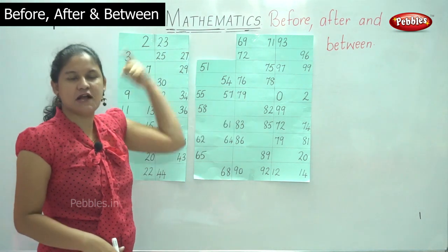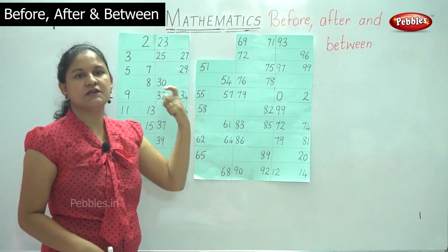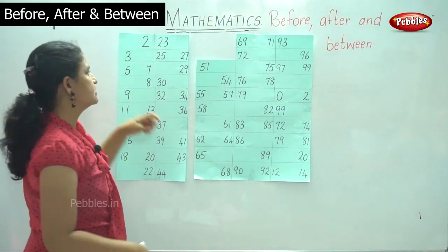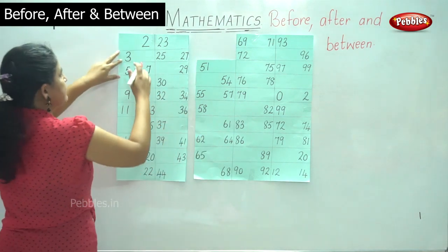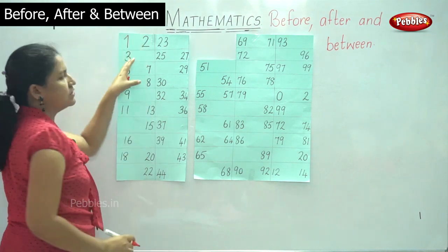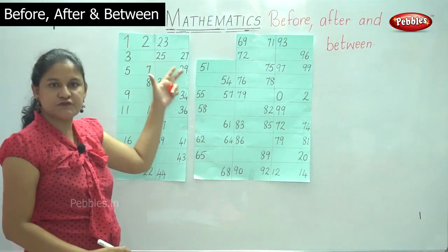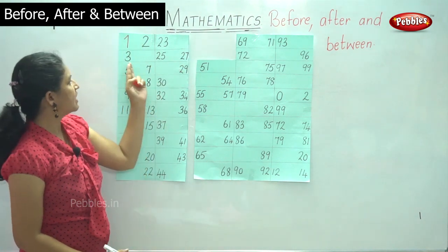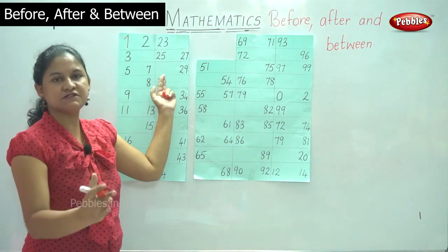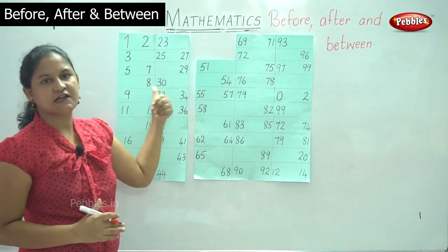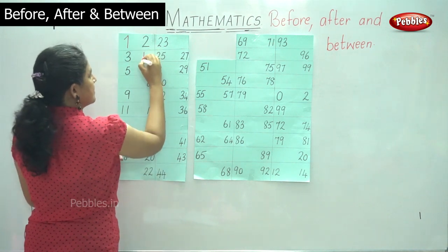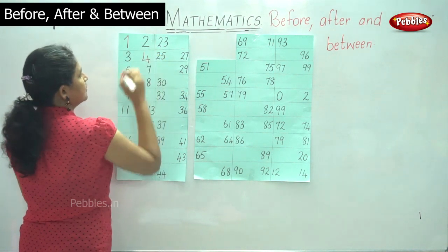We have to find what number comes before number two — it is number one. We have number one before number two. Then we have number three, and what number comes after number three? After number three comes number four.